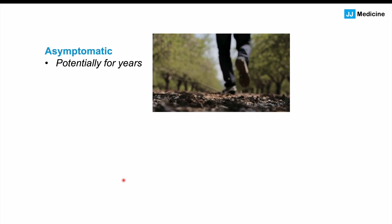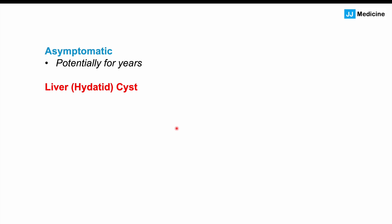Even if a person has ingested those embryonated eggs, and an onchosphere has penetrated the small intestinal wall, entered the bloodstream, been carried to the liver, and a cyst has started to form in the liver, patients may not have symptoms at all. Symptoms may not occur for weeks, months, or potentially even years — you could walk around and not even know you have it. That hydatid cyst can remain in the liver and may not cause any issues, but it can slowly grow, approximately one to five centimeters per year.